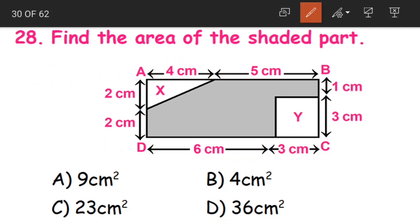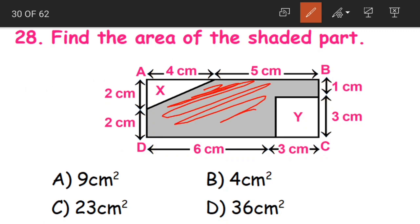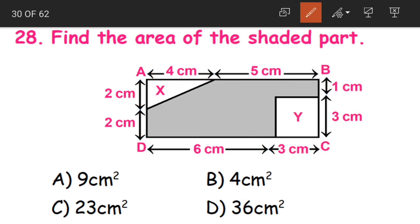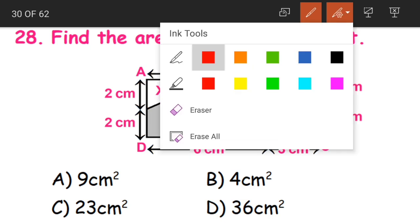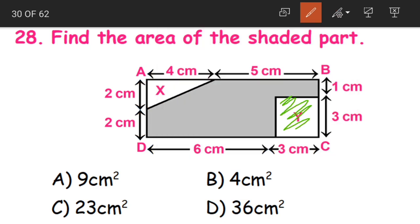Find the area of the shaded part. This is the area of the shaded part. Now how to find out the area of the shaded part: this is our entire rectangle. From this entire rectangle, except for this square Y and the triangle X, we have to find out the area of the remaining figure. So what can we do children?